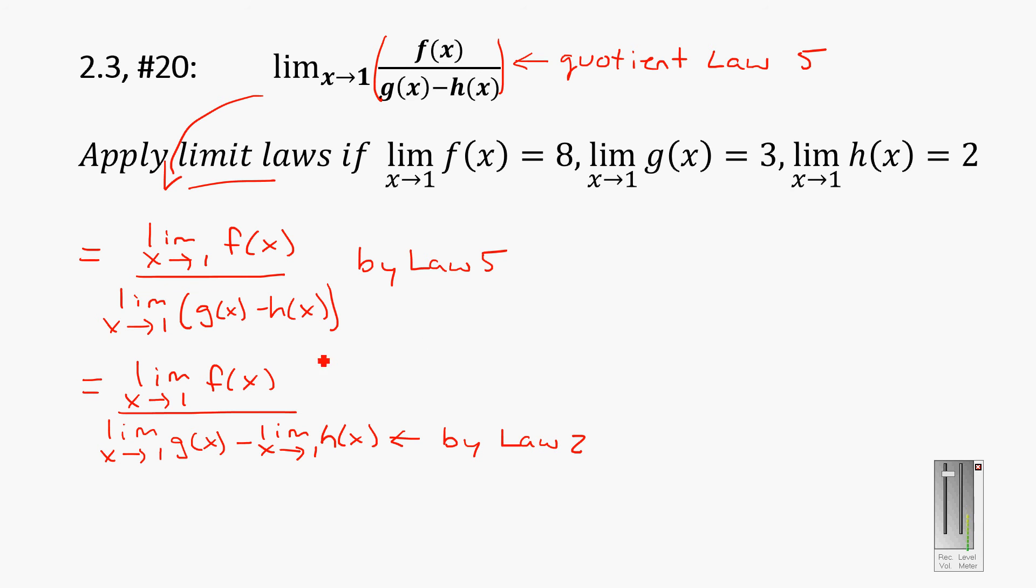Now why do we like this? Well, the reason why we like this is now these are written in this format because limit of x goes to 1 of f of x is equal to 8. So I can go over here now and say this is equal to, because this is truly that, it's equal to 8 on the top over limit as x goes to 1 of g of x is written exactly like that, over 3 minus limit as x goes to 1 of h of x is 2.